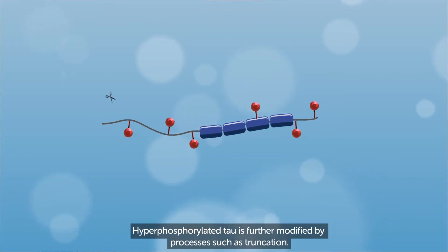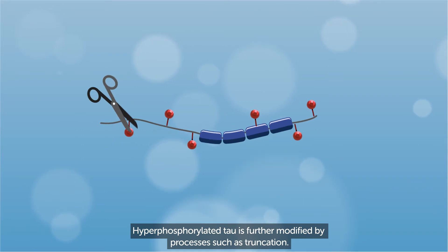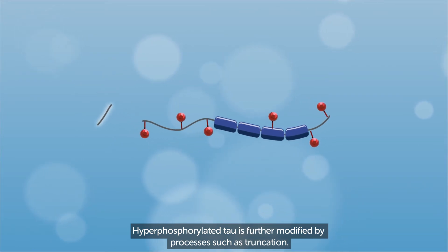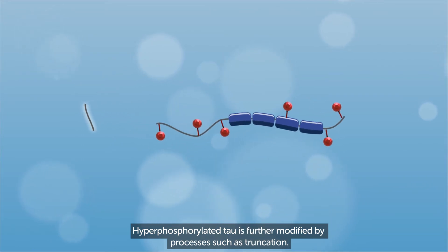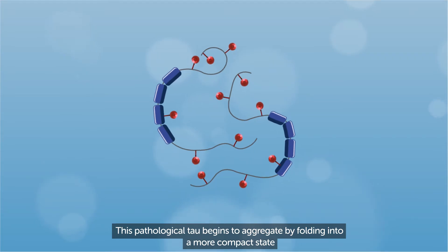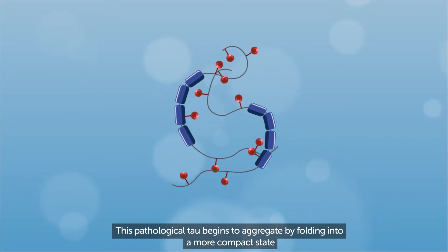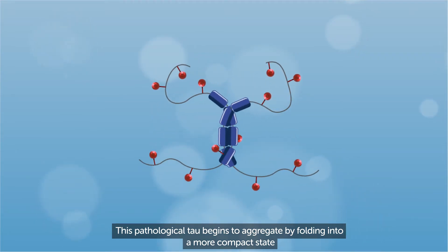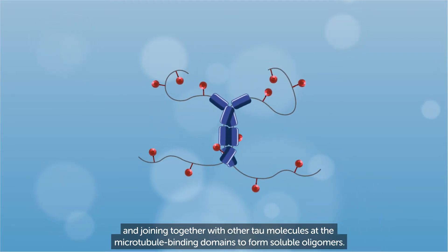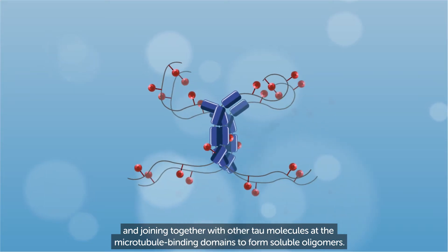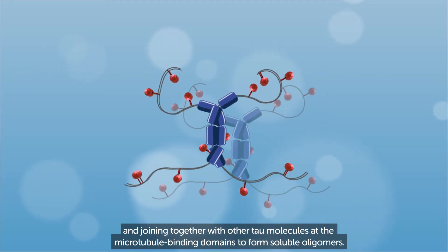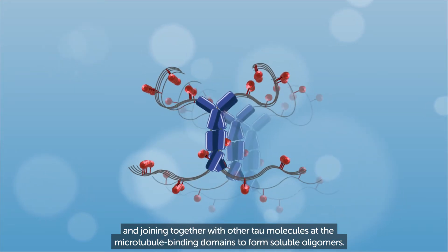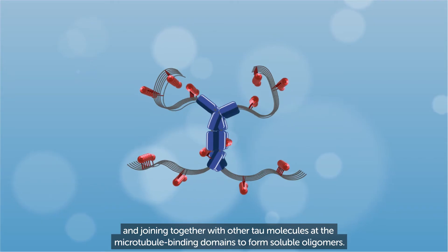Hyperphosphorylated tau is further modified by processes such as truncation. This pathological tau begins to aggregate by folding into a more compact state and joining together with other tau molecules at the microtubule binding domains to form soluble oligomers.